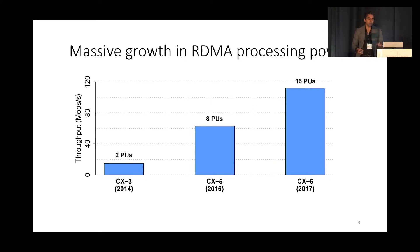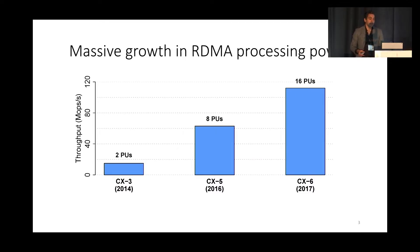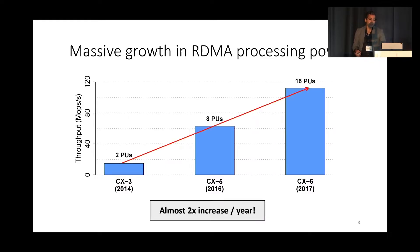RDMA has importantly been witnessing massive growth in the processing power of RDMA NICs. As we can see here, the ConnectX NICs produced by NVIDIA show almost a 2x increase in processing power for each generation. One of the advantages of this is that now we have some extra processing power that we can likely use, for example, to offload application code. So this presents an opportunity for us.